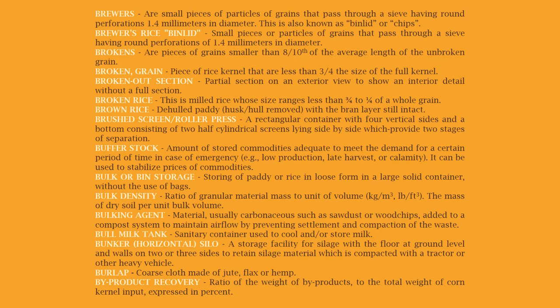Bulk or bin storage: storing paddy or rice in loose form in a large solid container without the use of bags. Bulk density: the ratio of granular material mass to unit volume (kilograms per cubic meter, pounds per cubic foot); the mass of dry soil per unit bulk volume. Bulking agent: material, usually carbonaceous such as sawdust or wood chips, added to a compost system to maintain airflow by preventing settlement and compaction of the waste.